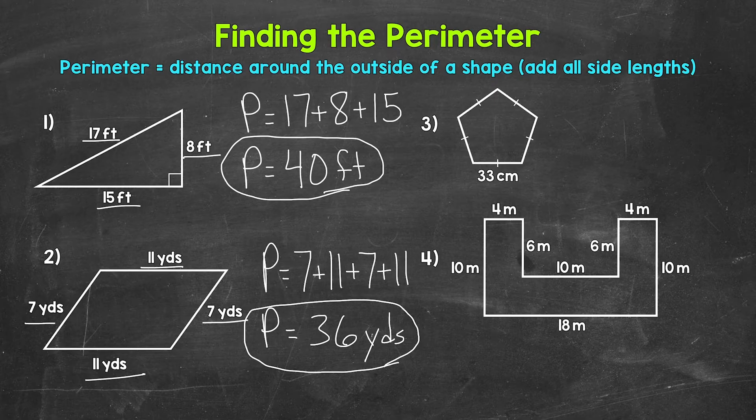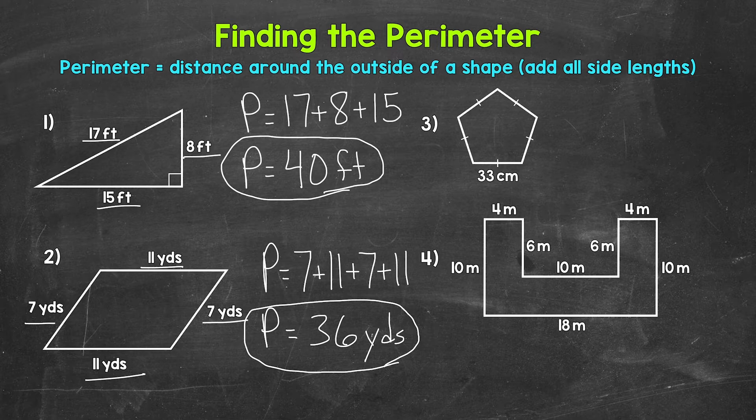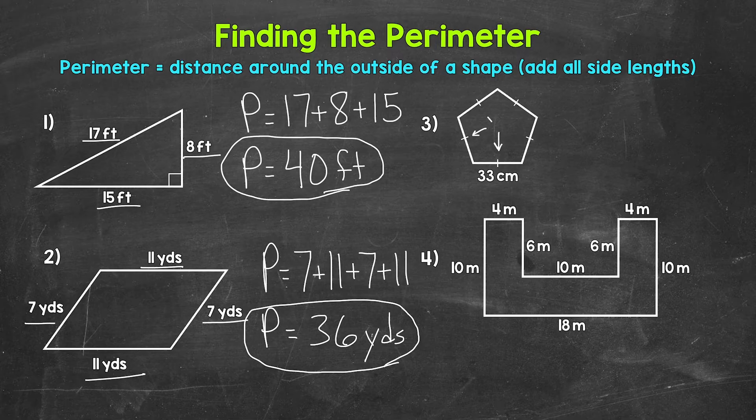Next, let's move on to number three, where we have a pentagon, so five sides. And this is a regular pentagon, which means all of the sides are the same. They are all 33 centimeters for this example. Now you'll notice that each side has one tick mark. Those show us that each side is the same length.